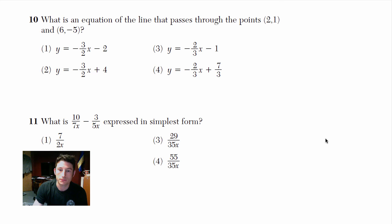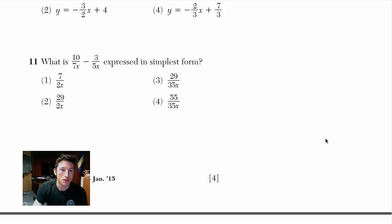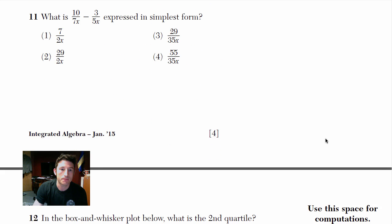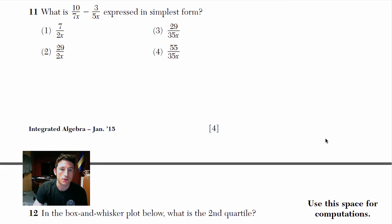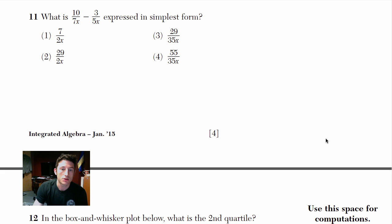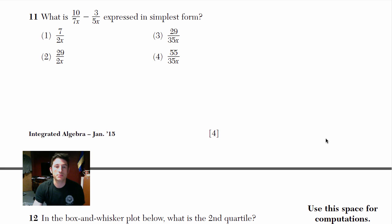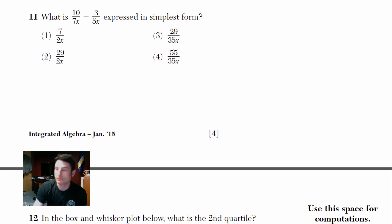Moving on to number 11. We've got these expressions: 10 over 7x minus 3 over 5x, and they want it in simplest form. We've got to get common denominators.